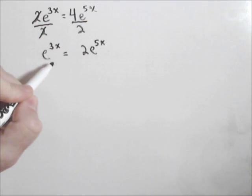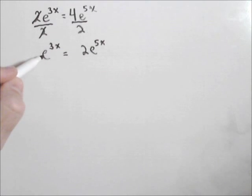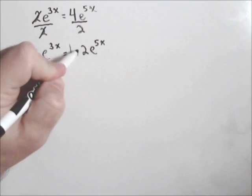Now at this point the way I like solving these, I see I have an exponential on both sides and it has a base of e. So what I'm going to do is take the natural log of both sides.